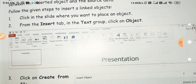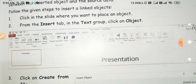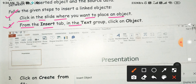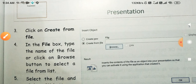To insert a linked object, follow these steps. Number 1: Click in the slide where you want to place an object — सबसे पहले उस slide पर click करना होगा जहाँ पर आप insert करना चाहते हैं। Number 2: From the Insert tab, in the Text group, click on Object. Number 3: Click on 'Create from File'.